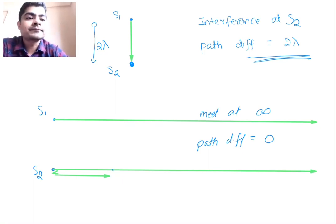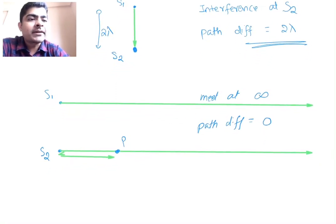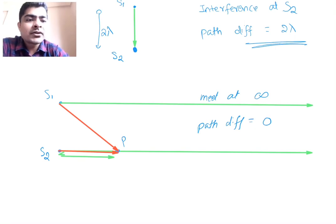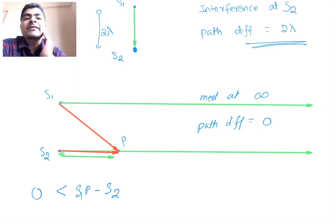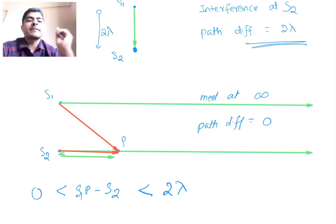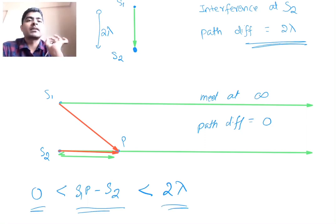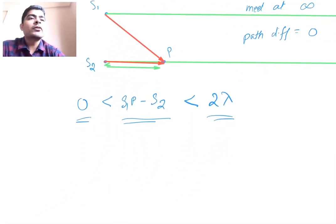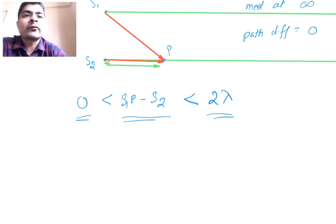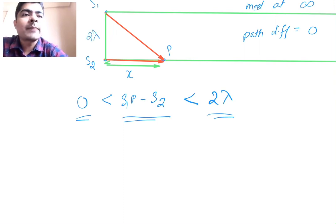We can conclude that for point p, the path difference s1p minus s2p is greater than 0 but less than 2 lambda — because at s2 the path difference is 2 lambda and at infinity it is 0. So as you go from s2 to infinity, the path difference decreases from 2 lambda to 0. We have to find the minimum value of x, where s1-s2 = 2 lambda.